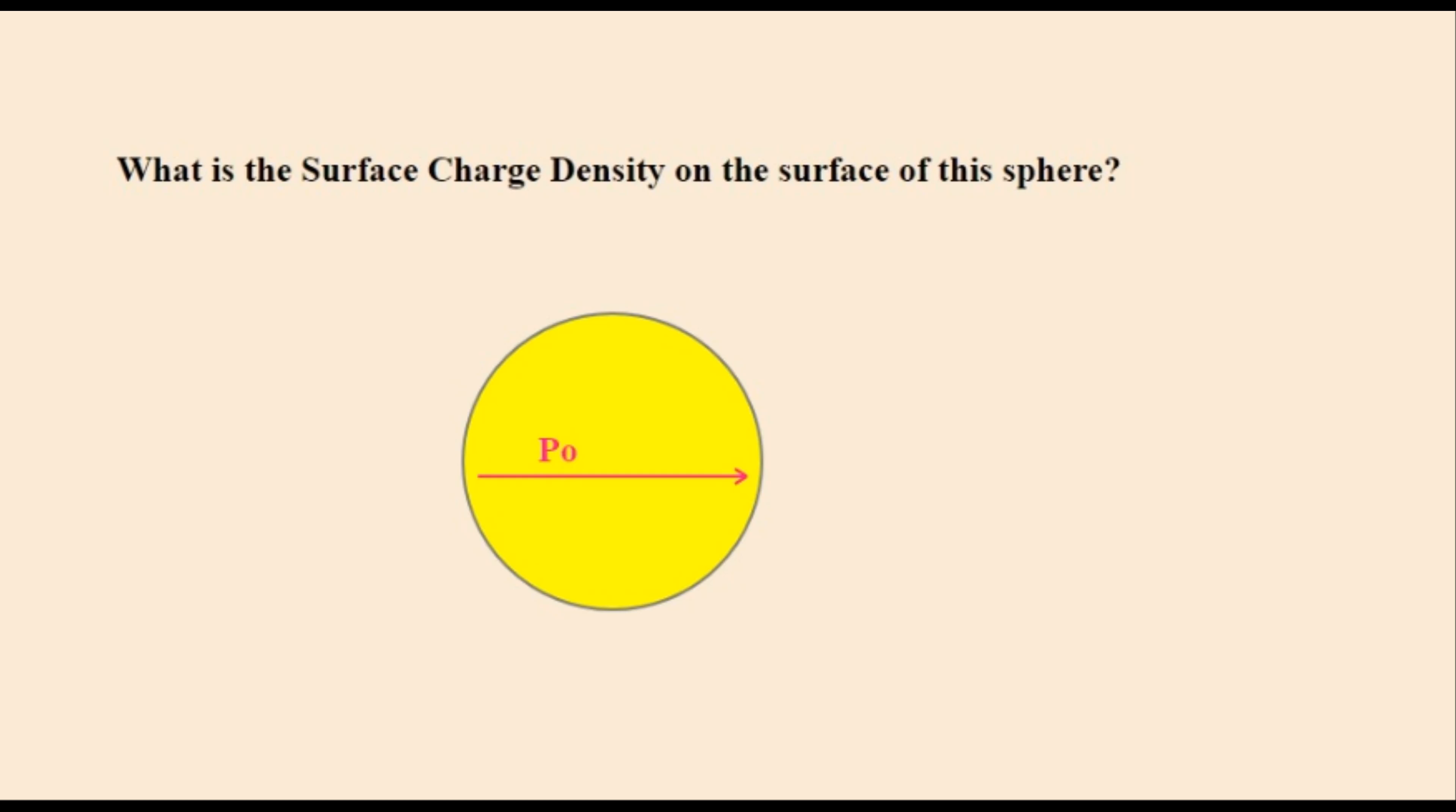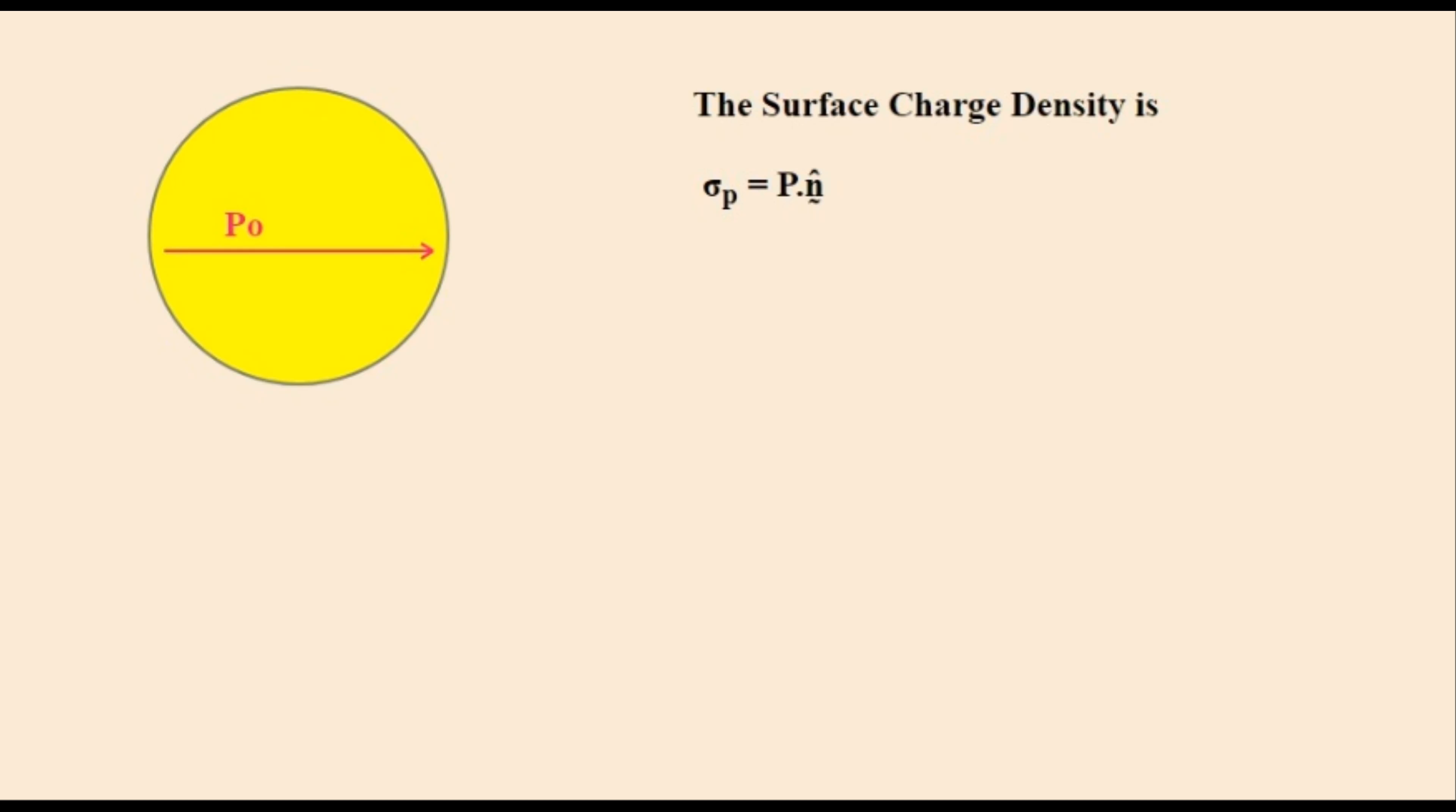Now we'll look at another type of solid, the polarized sphere. It has a constant polarization of P0 in the I direction everywhere inside it. To calculate its surface charge density we first invoke this equation which is its definition. This is the value of P that we'll plug into it.